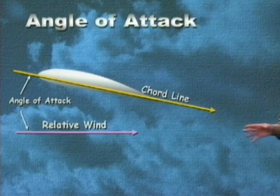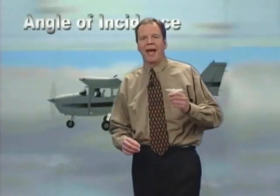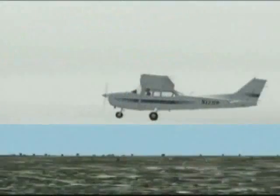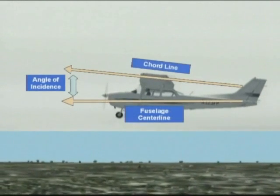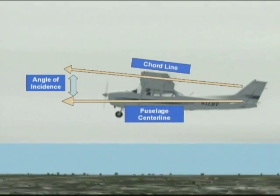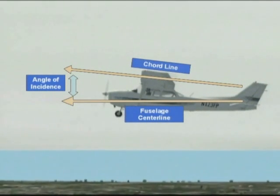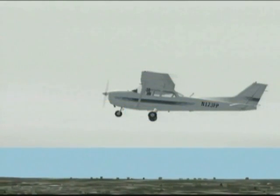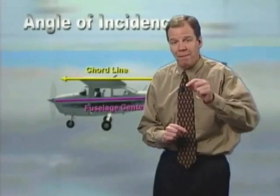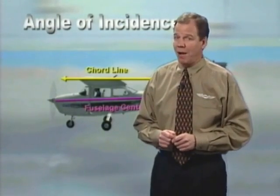Our last term is called the angle of incidence. The angle of incidence is the angle between the chord line and the centerline of the fuselage, as seen right here. The angle of incidence is usually very small and is designed into the aircraft by the manufacturer. Unless you take your airplane apart, it cannot be changed or adjusted by the pilot.